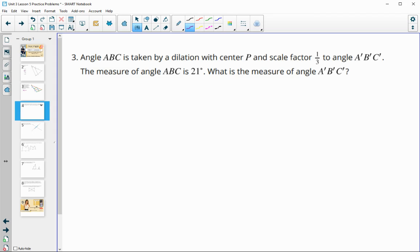Number three. Angle ABC is taken by a dilation with center P, scale factor one-third, to angle A'B'C'. The original angle measure is 21 degrees, so what is the measure of the dilated angle? We know that angle measures don't change in dilations, so the new one is still 21 degrees.